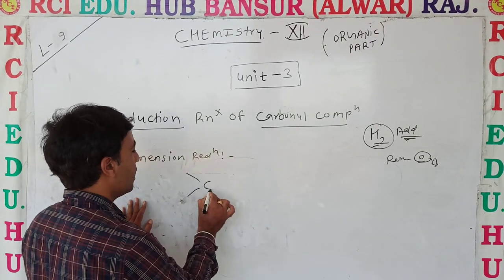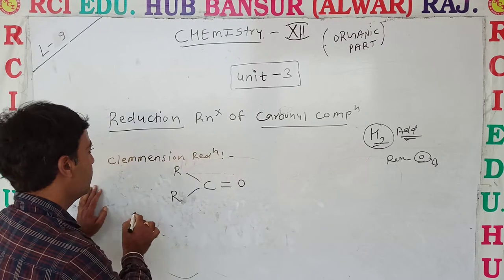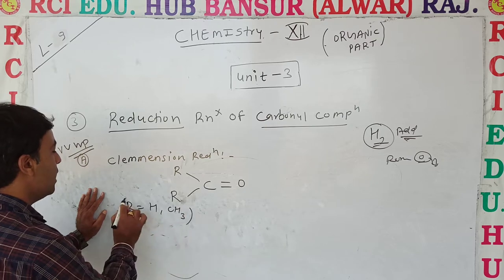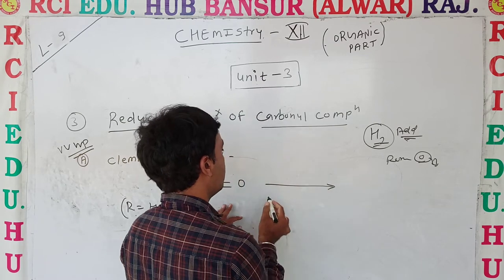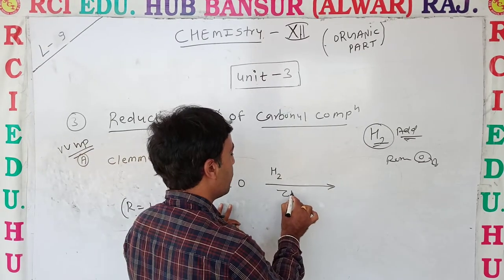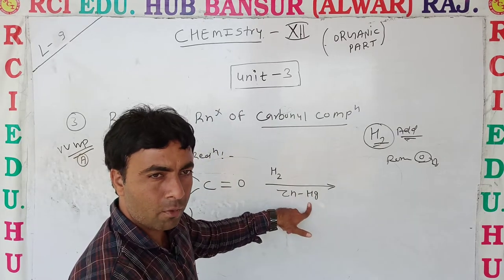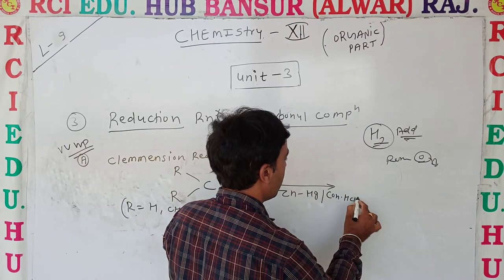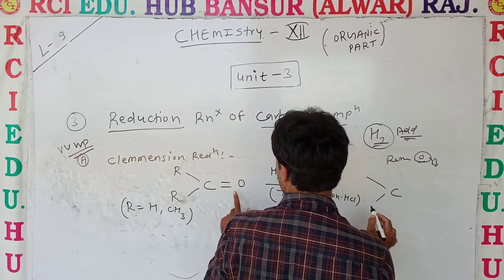Clemmensen Reduction is applied to a carbonyl compound — it may be an aldehyde or a ketone, meaning R may equal H or R may equal CH3. We use the carbon compound in a concentrated HCl medium. Zinc amalgam (Zn-Hg) is used to facilitate the addition of hydrogen, changing the oxygen to hydrogen.